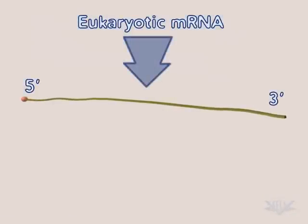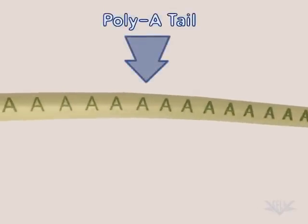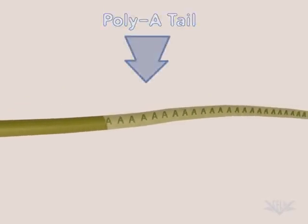Let's see the process in action. Eukaryotic mRNA, the substrate for translation, has a unique three-prime end called the poly-A tail.